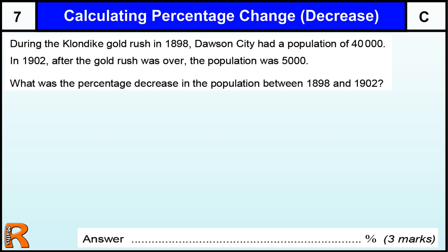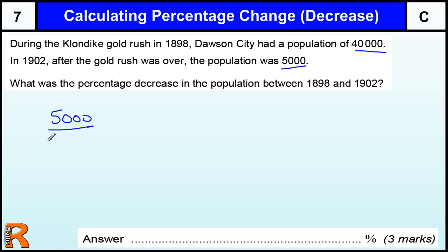Calculating percentage change — in this case a decrease — a level 7 grade C question. We're told the population was 40,000 to start with and it's reduced to 5,000. Now there are two ways to do this. One really quick way is to just work out the percentage multiplier. We know that we've ended up with 5,000 and originally it was 40,000.